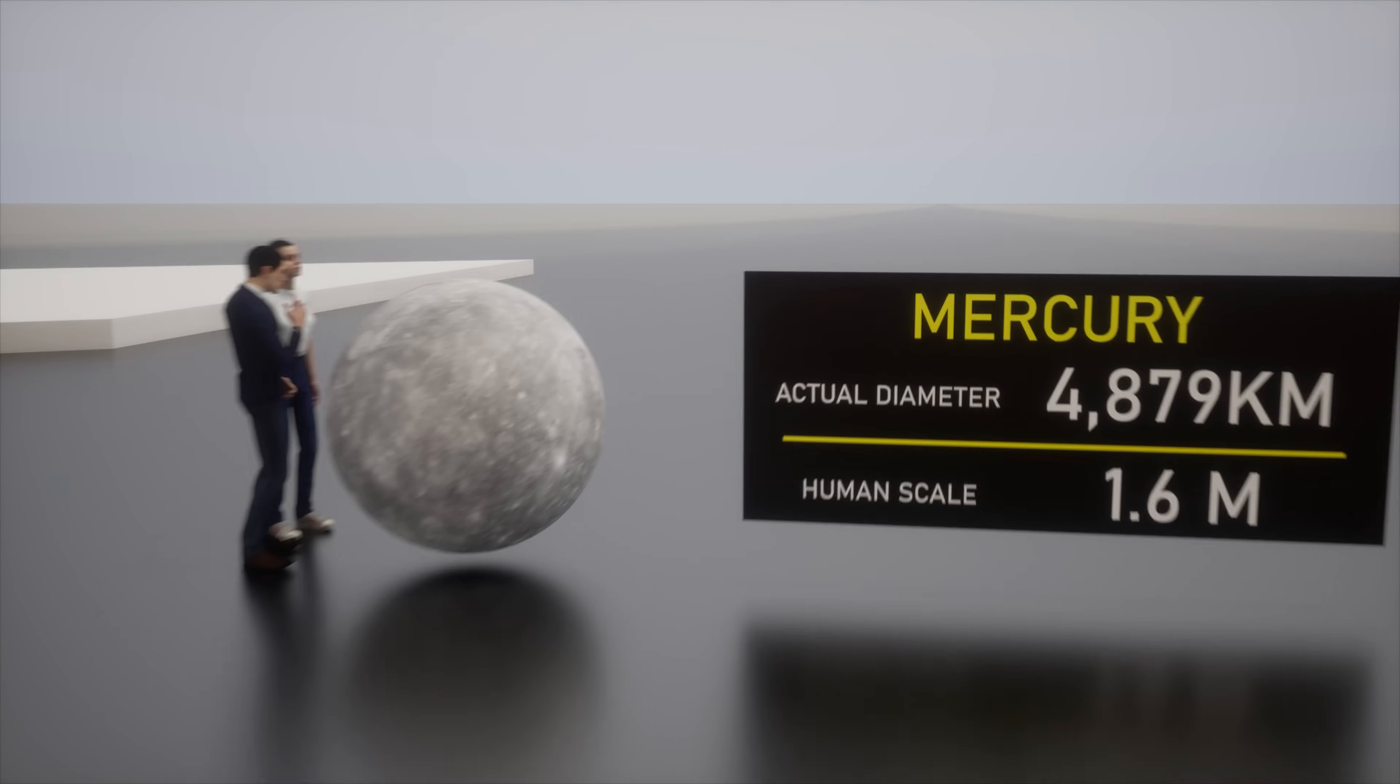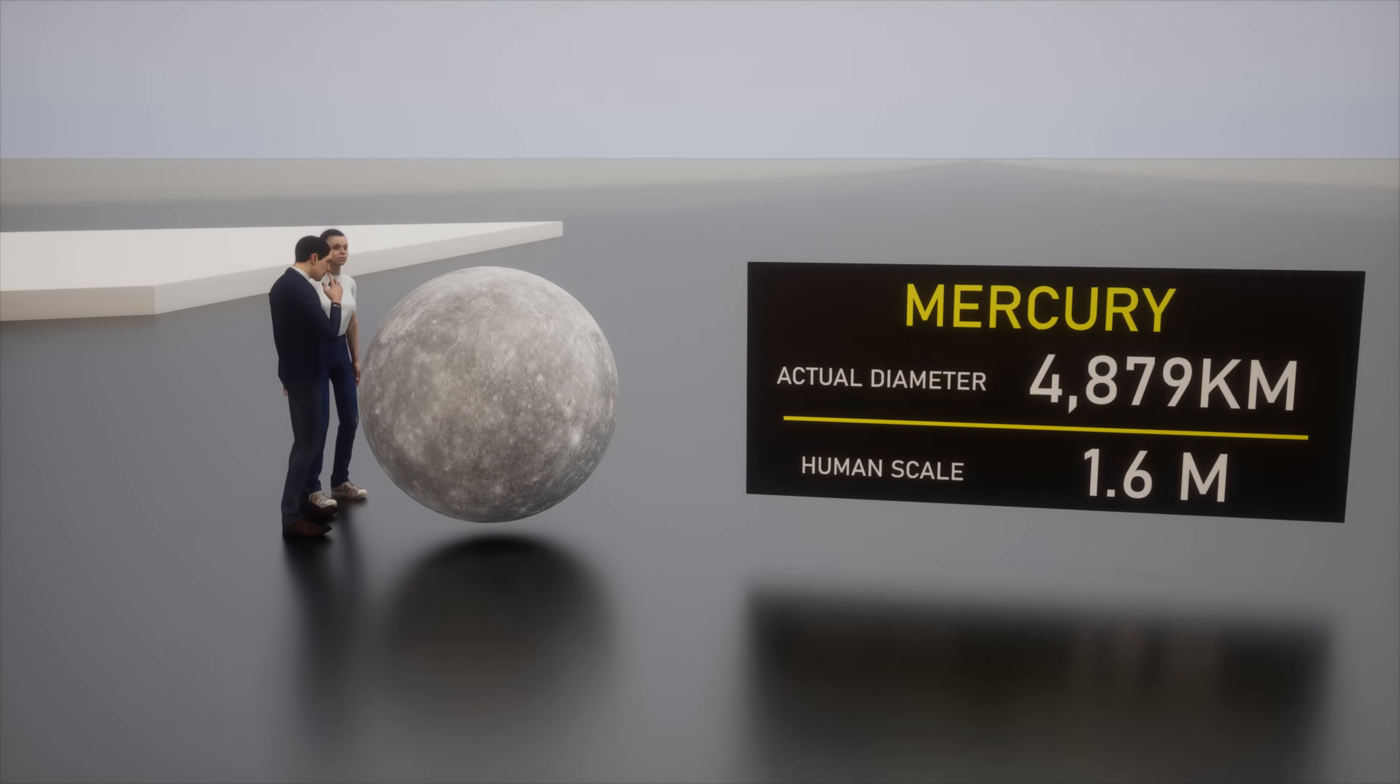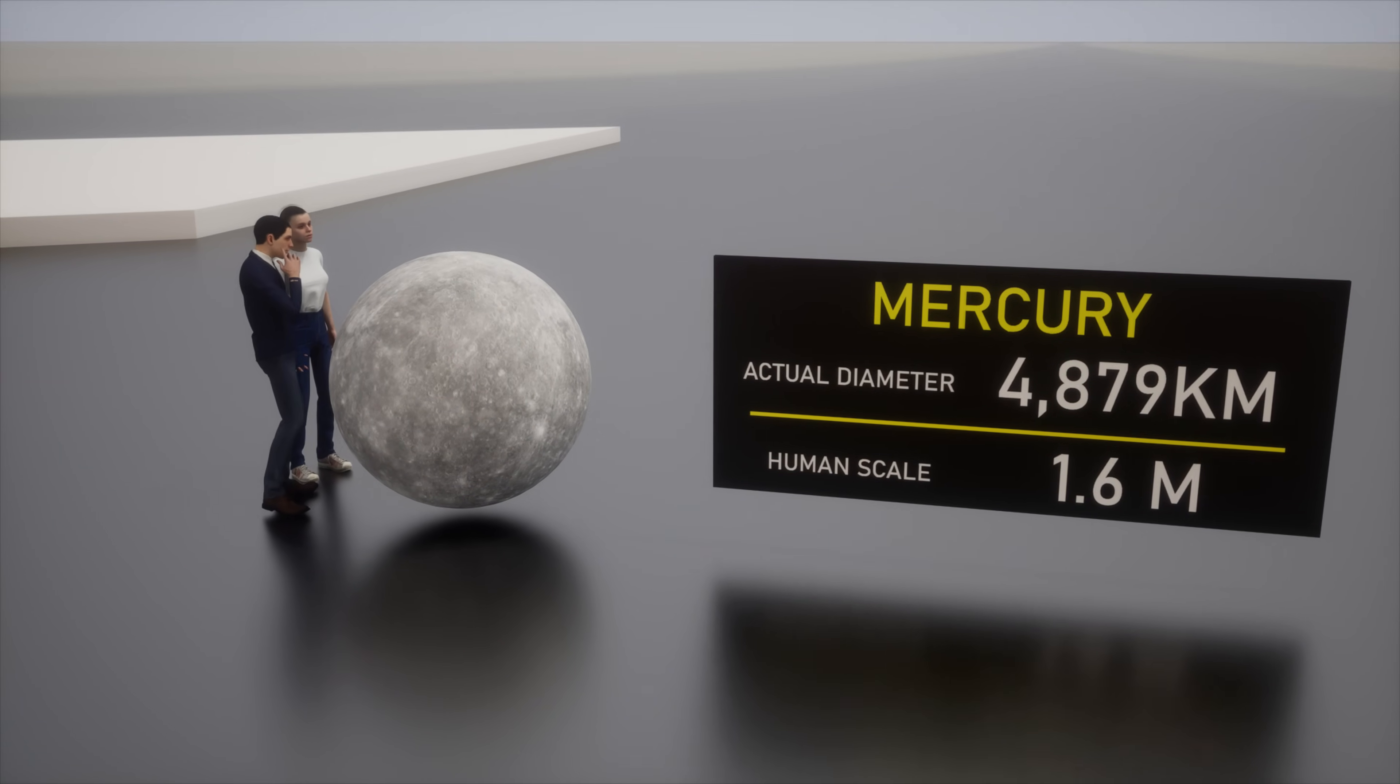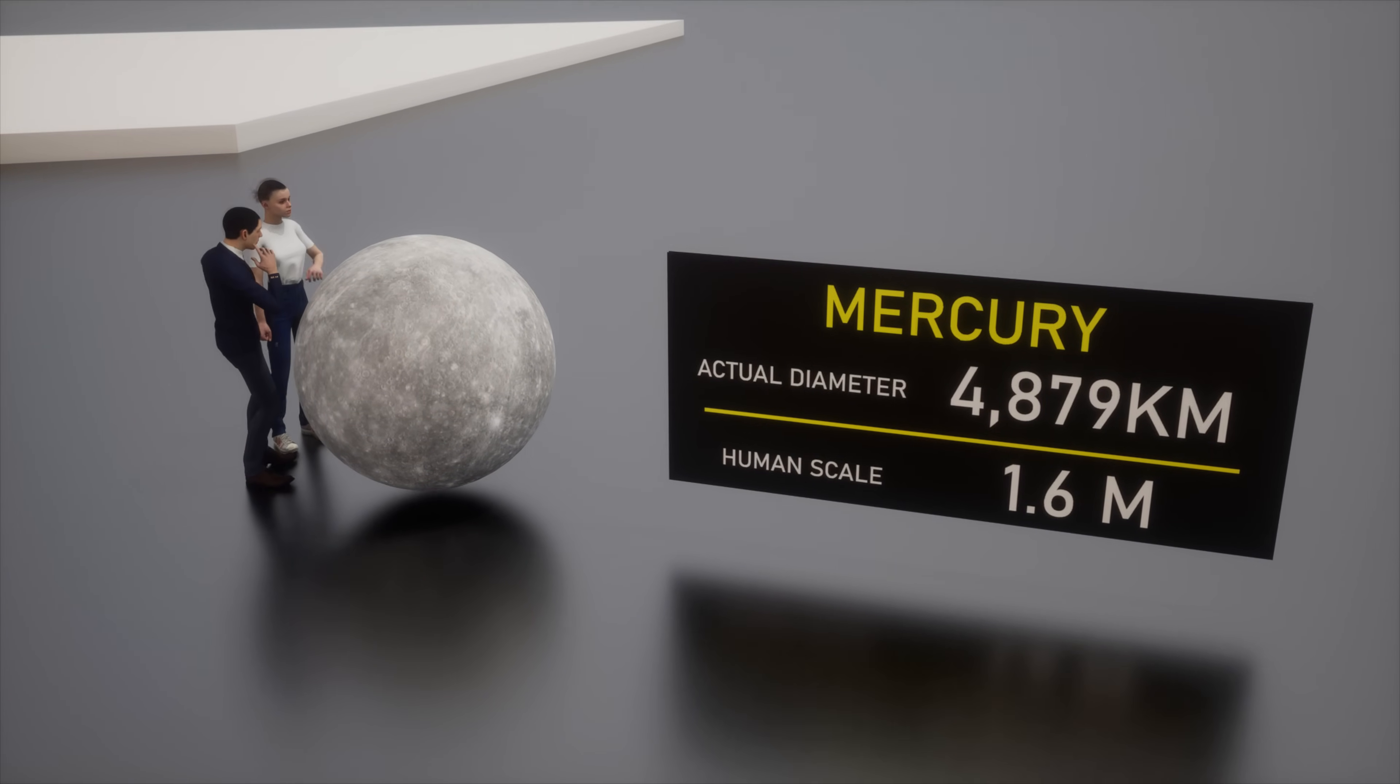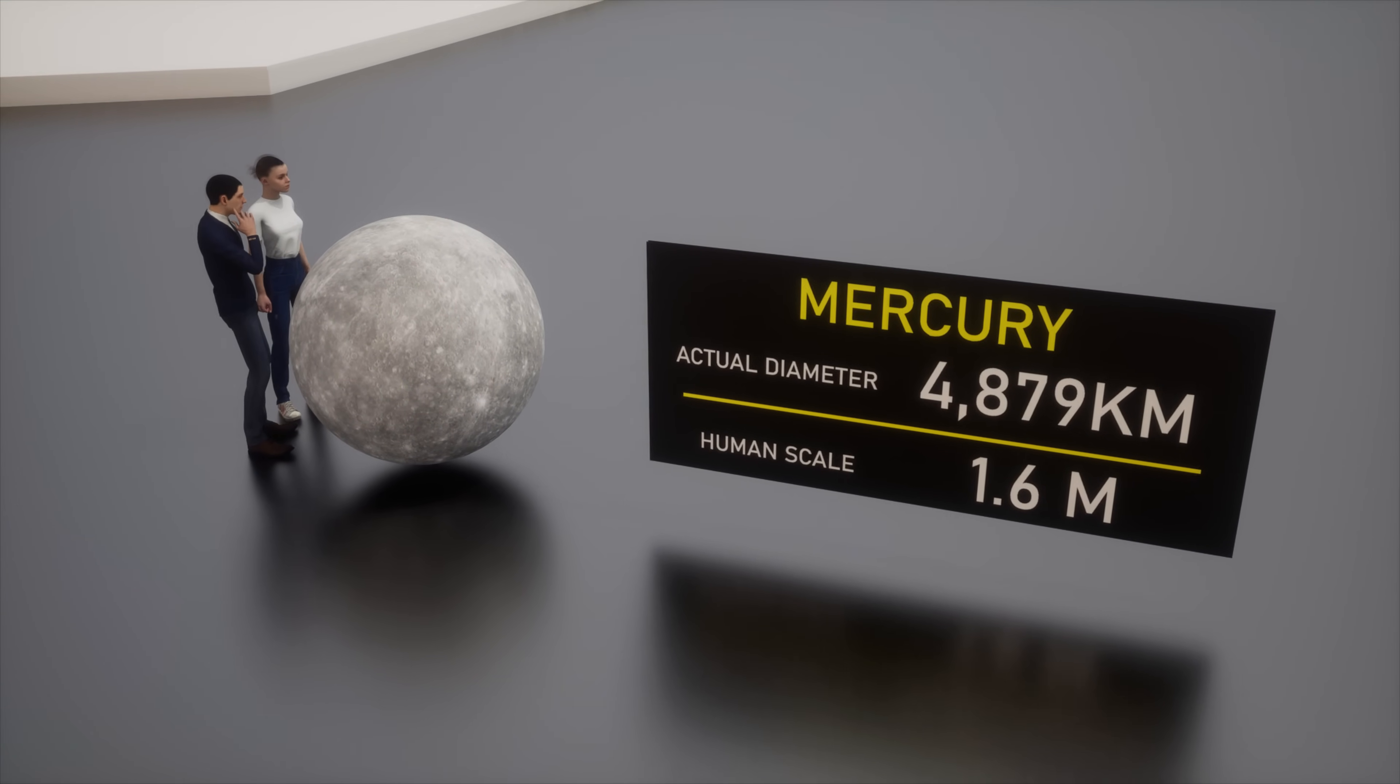We begin our journey with Mercury, the smallest planet in our solar system. Picture yourself standing next to a person of average height. That's about the size of Mercury.